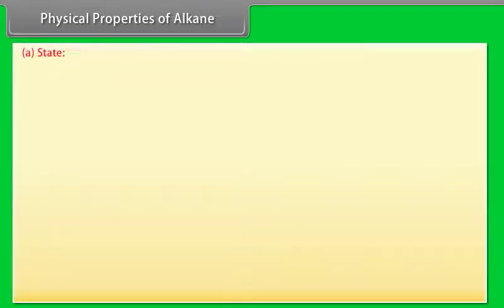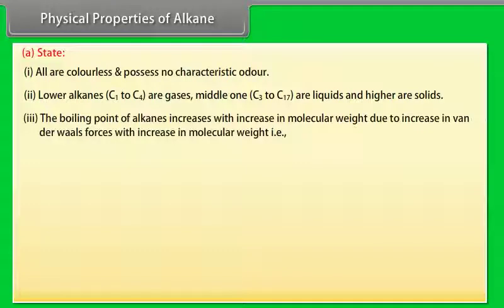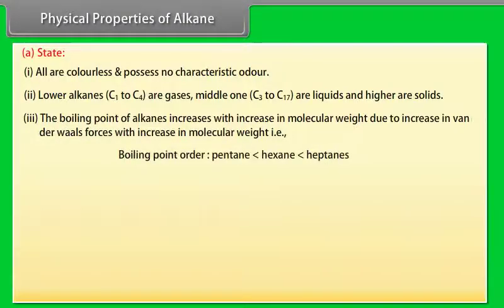Physical properties of alkanes, State: 1. All are colorless and possess no characteristic odor. 2. Lower alkanes, C1 to C4, are gases. Middle ones, C5 to C17, are liquids and higher are solids. 3. The boiling point of alkanes increases with increase in molecular weight due to increase in van der Waals forces with increase in molecular weight. That is, boiling point order: pentane is less than hexane, is less than heptanes.